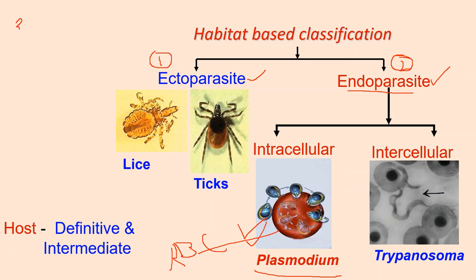Third, gut endoparasites are found in some part of the alimentary canal. For example, Giardia intestinalis, found in the human intestine, causes giardiasis characterized by diarrhea. A very common example is Entamoeba histolytica in the small intestine of man, causing amoebic dysentery. The fourth category is body fluid parasites — these live in certain body fluids of the host. For example, Trypanosoma in the cerebrospinal fluid of man causes sleeping sickness; Wuchereria (the filarial worm) lives in the lymph vessels of man and causes elephantiasis; and Schistosoma (blood fluke) found in the blood of man causes schistosomiasis.